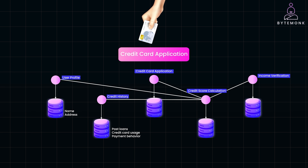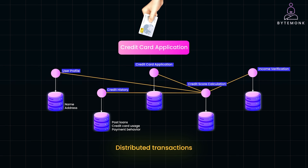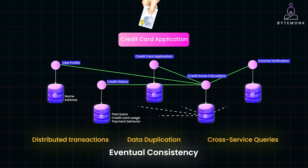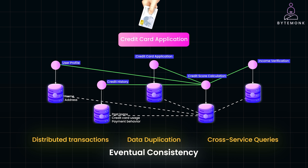While the database per service pattern offers numerous benefits, it also introduces challenges. Distributed transactions become complex since each service has its own database, requiring eventual consistency models instead of traditional transactions. Data duplication may occur to improve performance, but it can lead to inconsistencies if not handled properly. Additionally, cross-service queries are tricky, as you can't easily join data across different databases, forcing services to communicate with each other to retrieve the necessary information.